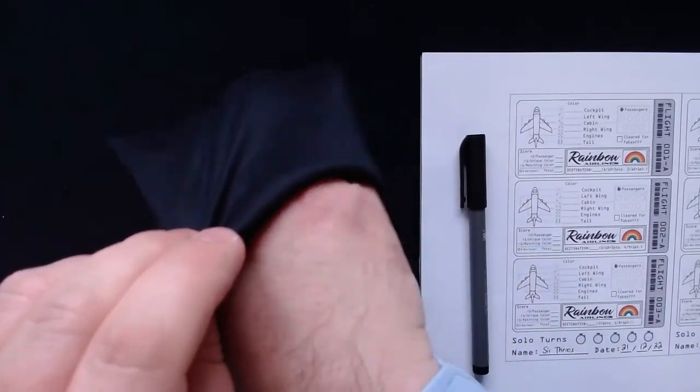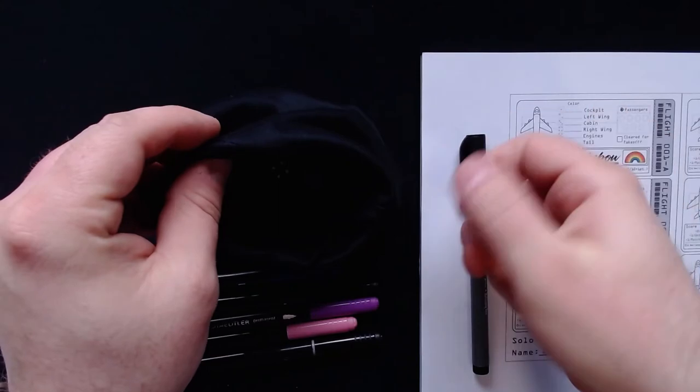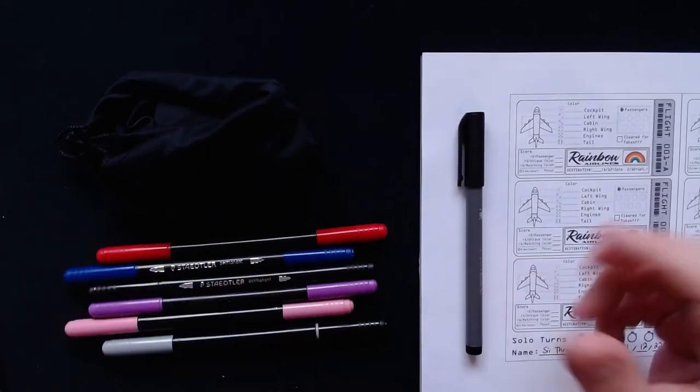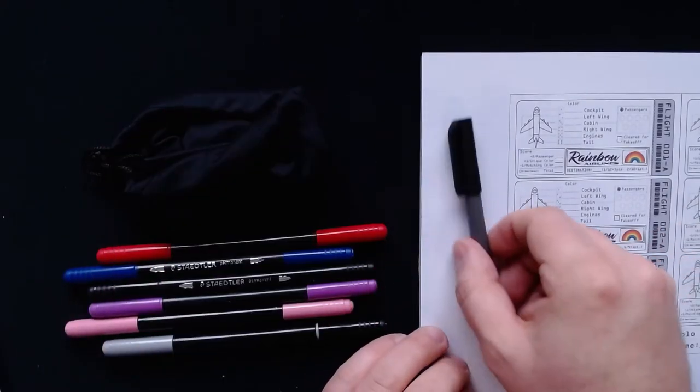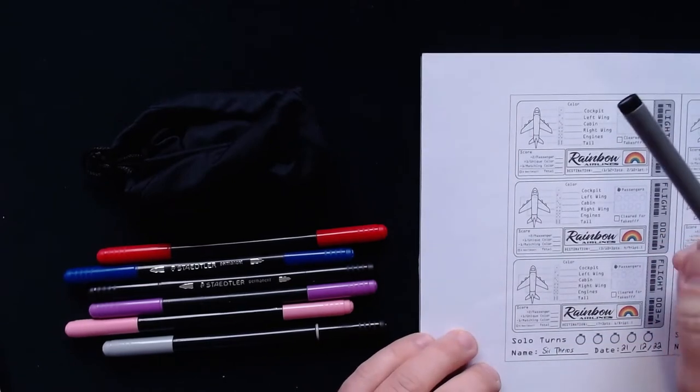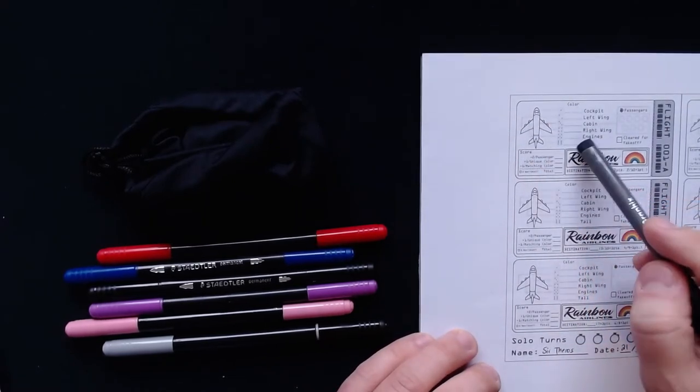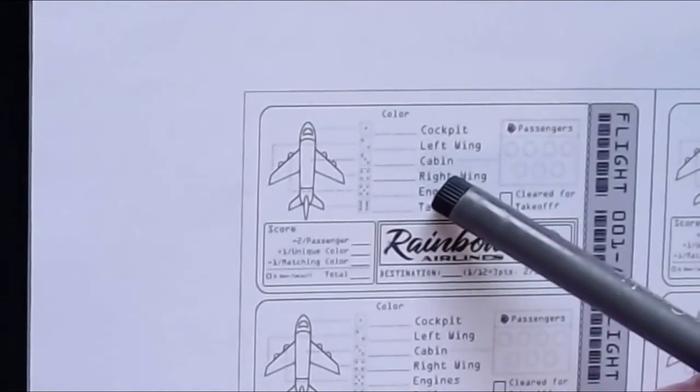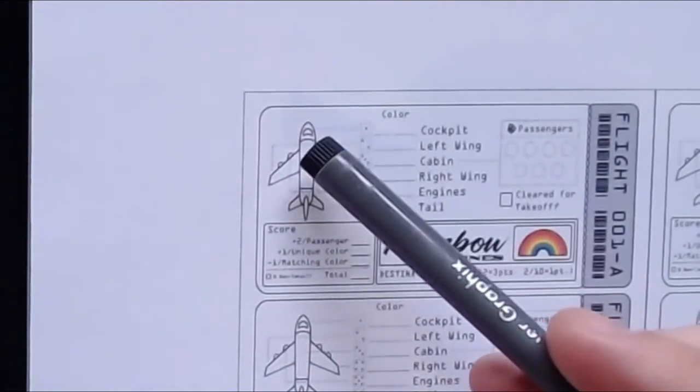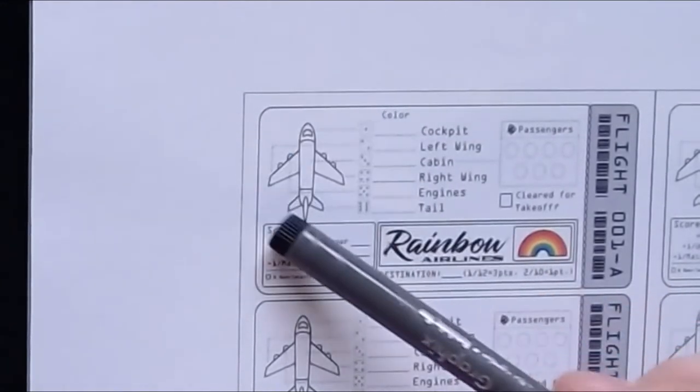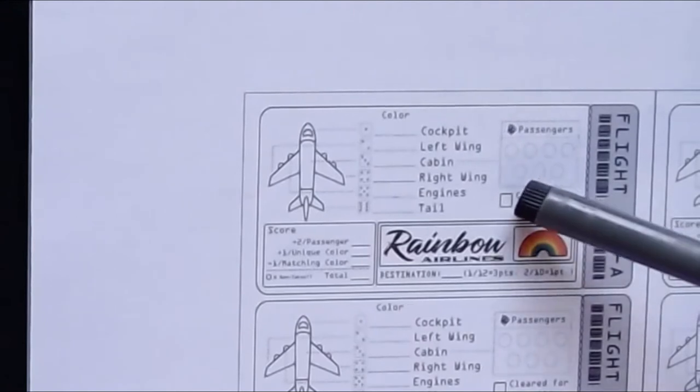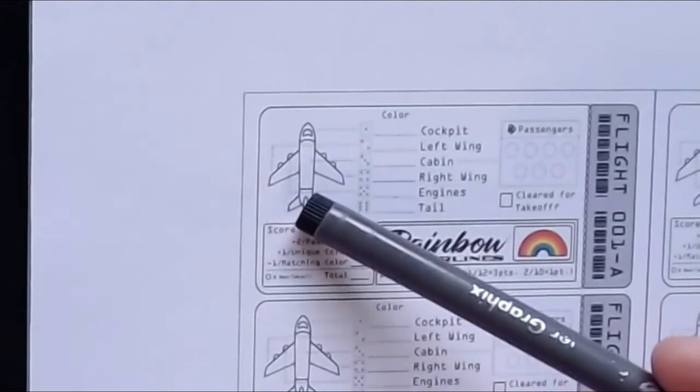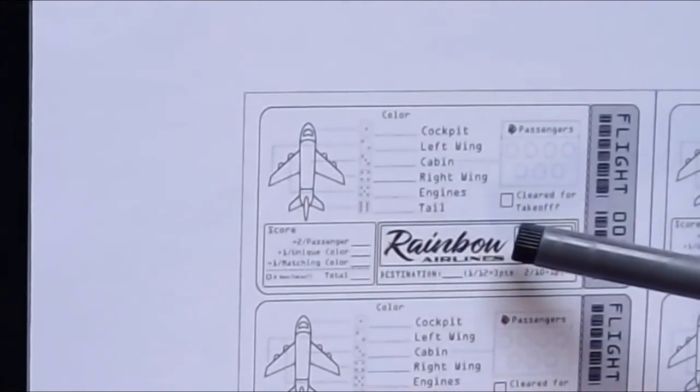So as you can see here, we have several different colored dice and pens that fit these dice. We will always pull two dice and then choose one of them or two. We can either take one of these dice to color in a specific part of the plane. We have cockpit, left wing, cabin, right wing, engines and tail. The number denotes which part it is and the color denotes which color we use to color that in. Our goal is to color in the plane completely because then we can clear for takeoff and score it at the end of the game. We get more points if the colors are different, we don't want the same colors, hence why it's called Rainbow Airlines.